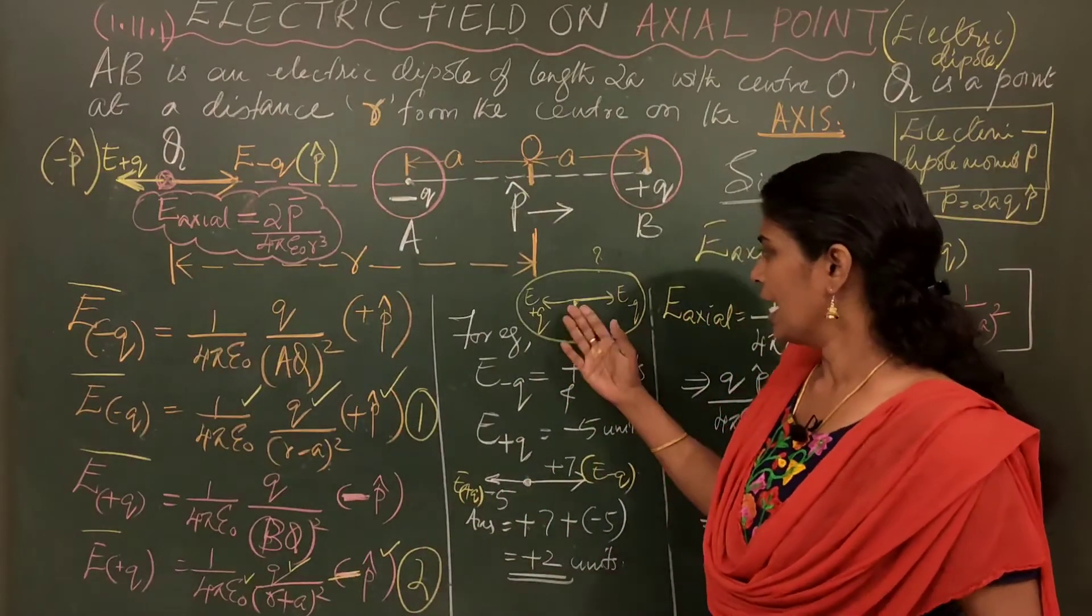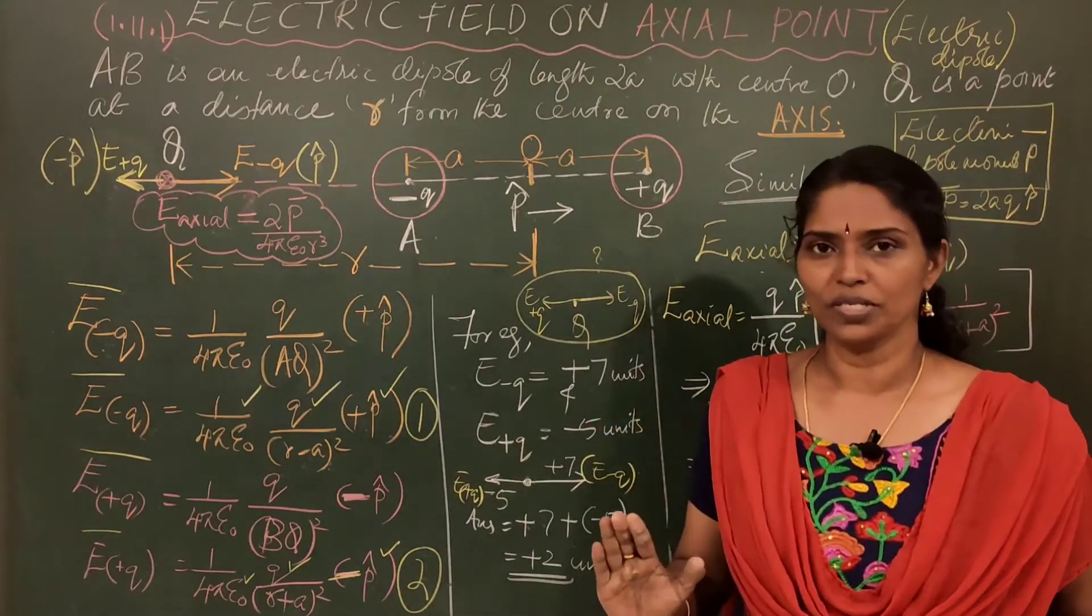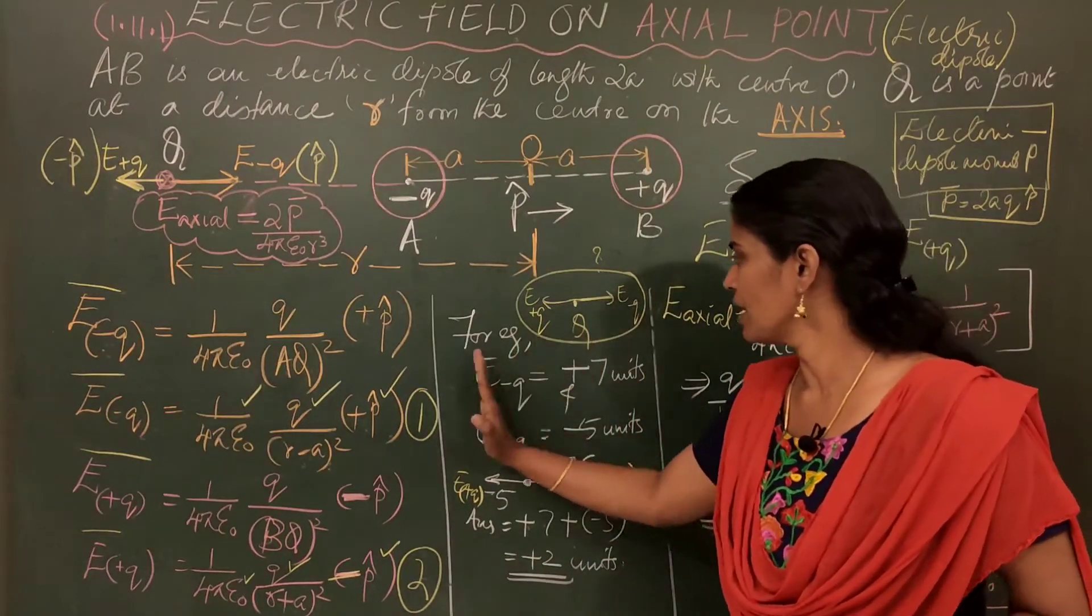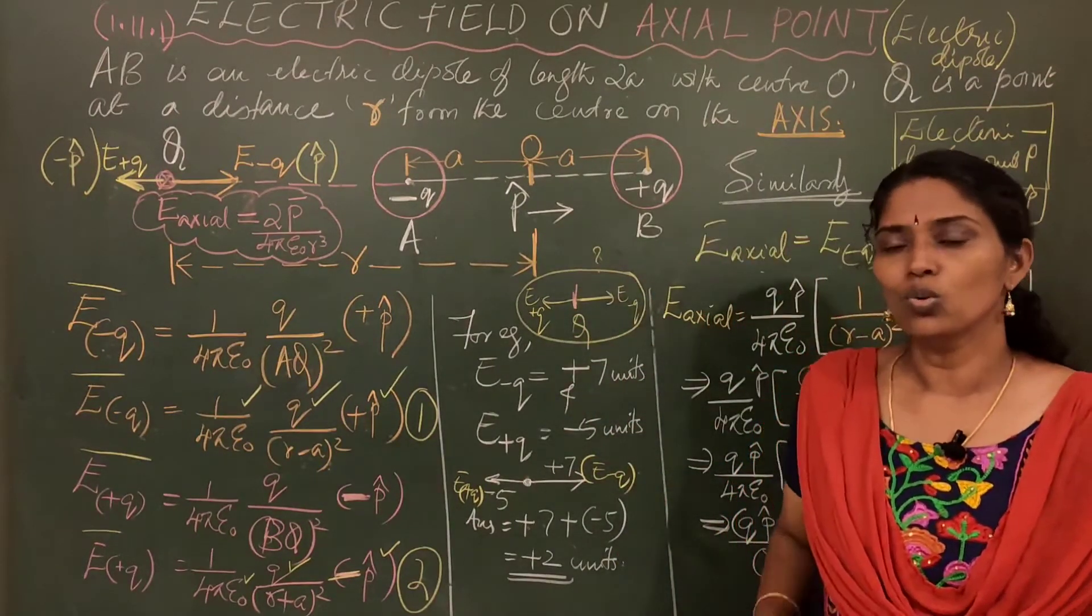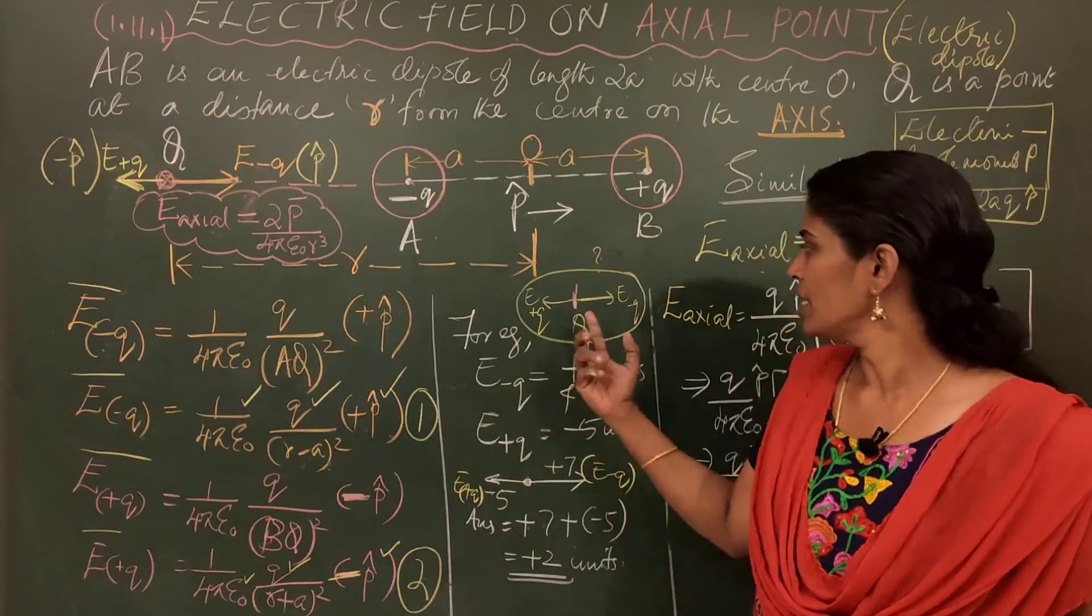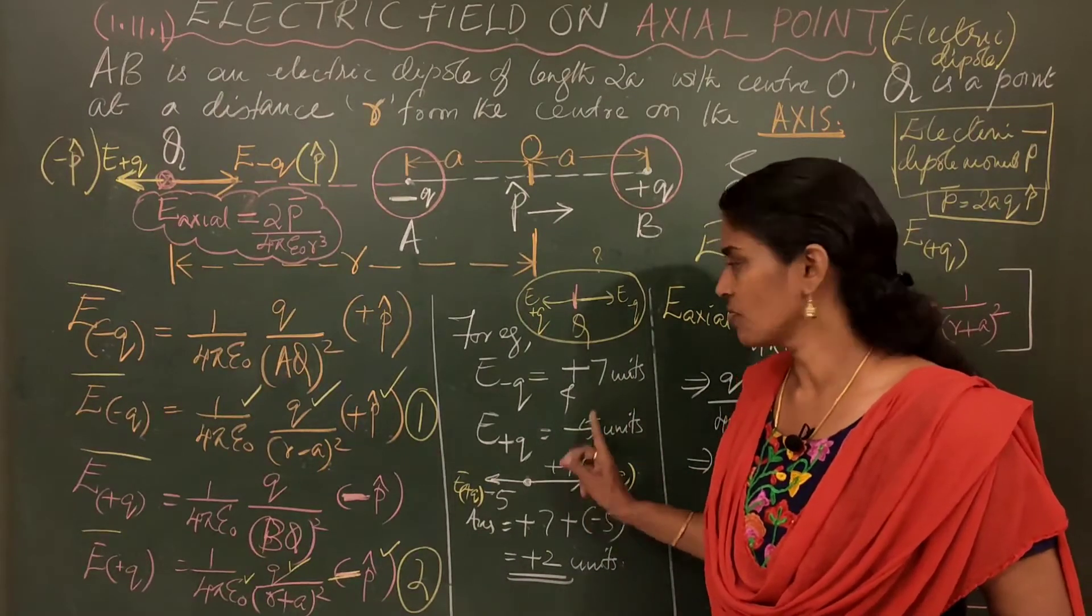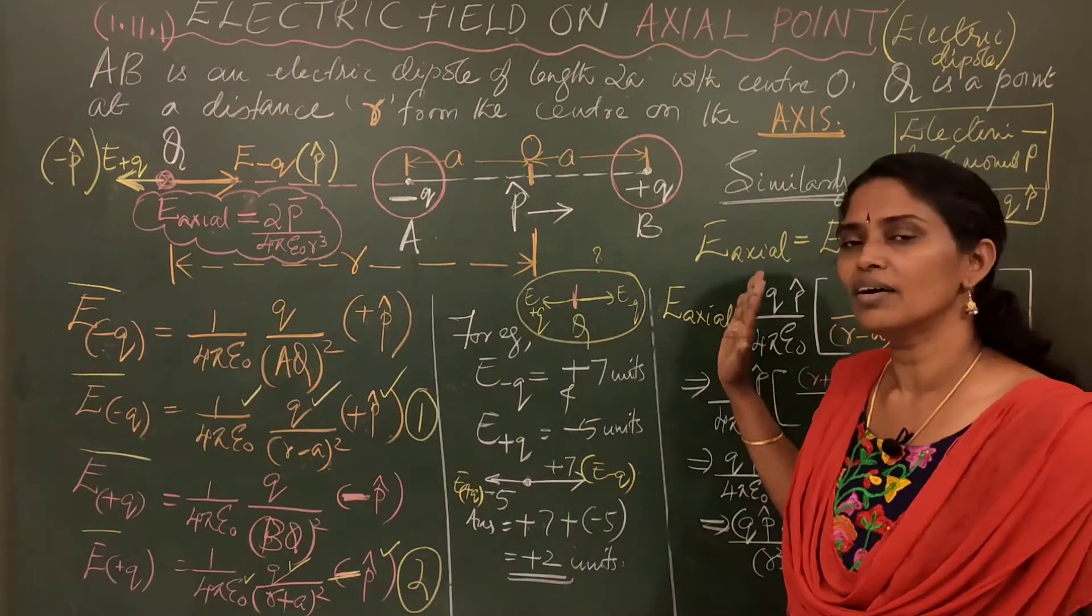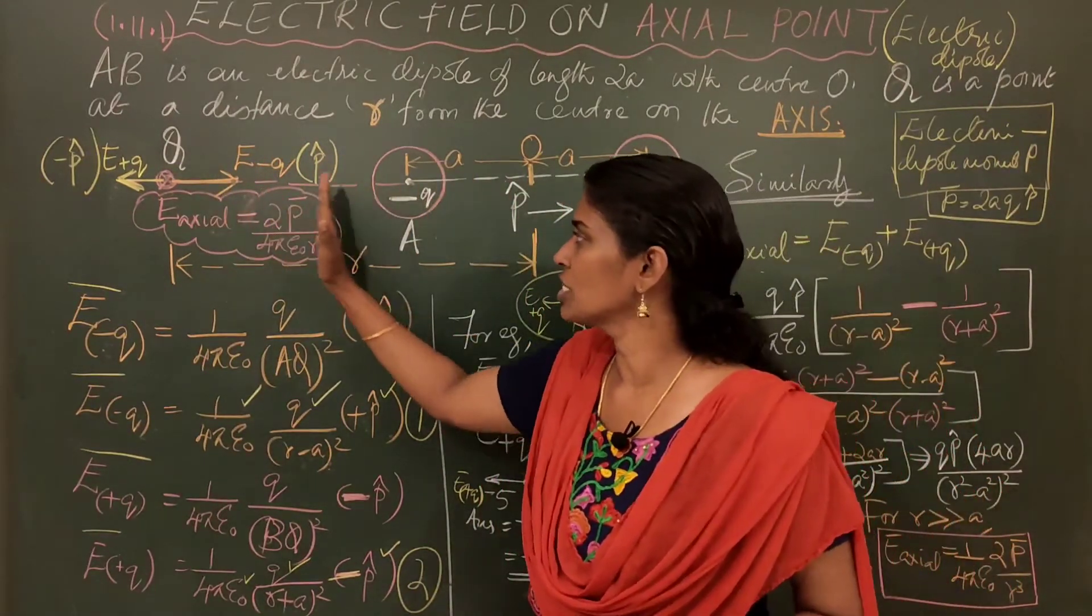Now, for example, at the point Q, you have two fields. One in this direction. The other one is opposite direction. Take an example. If it is plus 7 units towards right and if it is minus 5 units towards left. Assume this as a tug of war. Suppose this is a tug of war. Who will win the war? Very simple. The person with greater strength or greater might. Here who is the person with greater strength? E minus Q is plus 7. The other person is minus 5. So, he will be winning by how much units? Plus 2 units. Plus 2 units means 2 units towards the right. So, the net electric field will be in which direction? In the direction right.